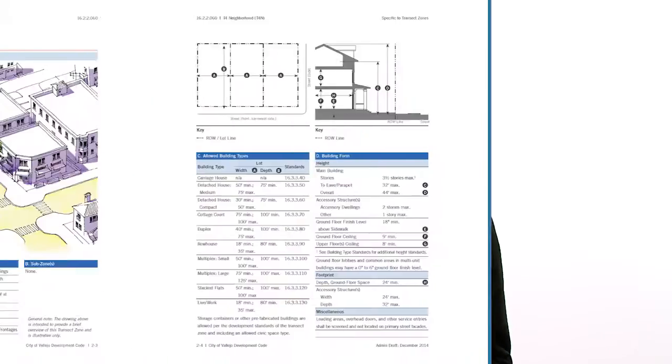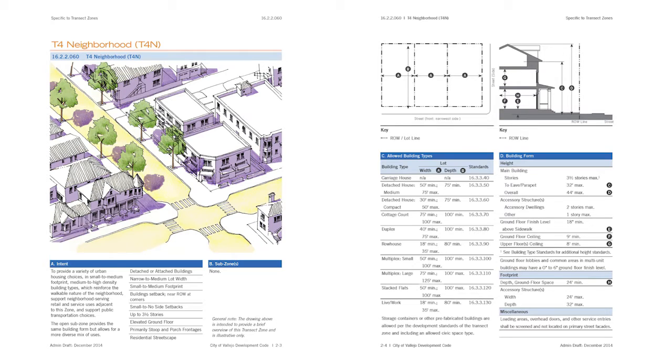Form-based codes use graphics to take the place of sentences when you can. For example, you can see just in that one image the kind of character we're looking for, as opposed to conventional zoning statements, which are long and use words like 'harmonious' and 'compatible' — and those are really hard to define. We just put it out there in a graphic format whenever we can.